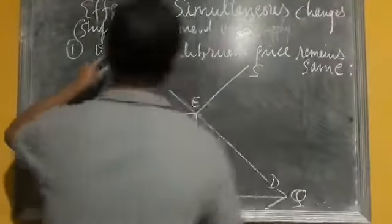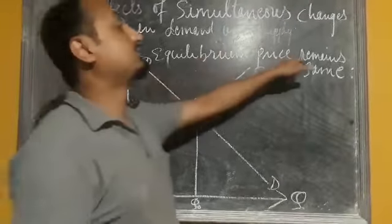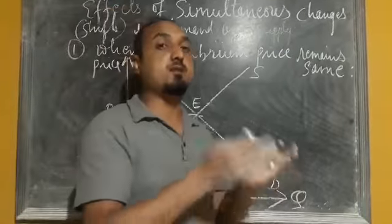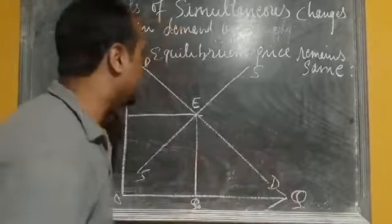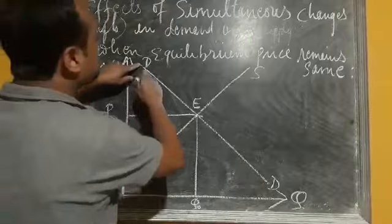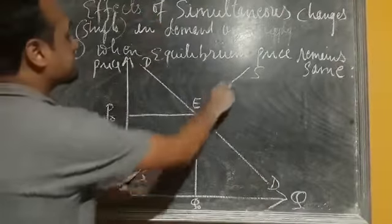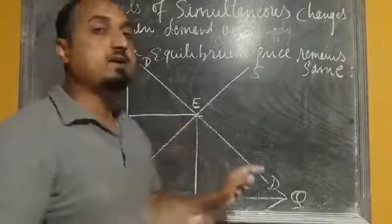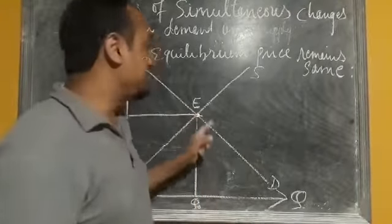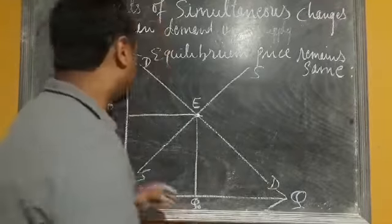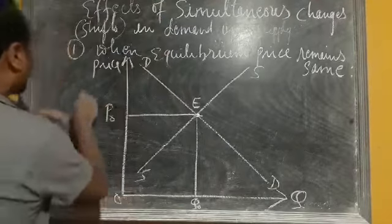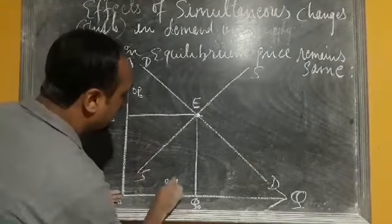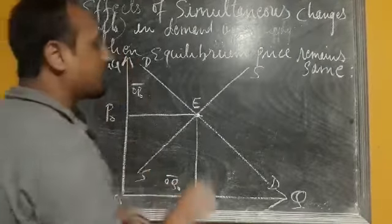The first possibility is when equilibrium price remains the same. Consider the initial demand curve DD and initial supply curve SS, intersecting each other at point E. So E is the equilibrium point, OP0 is the equilibrium price, and OQ0 is the equilibrium quantity.